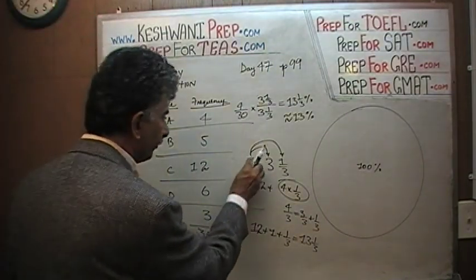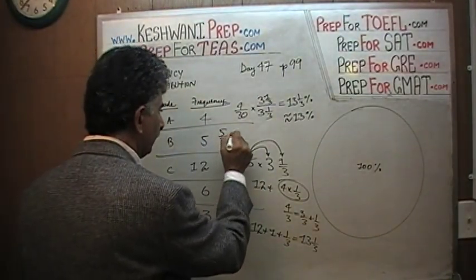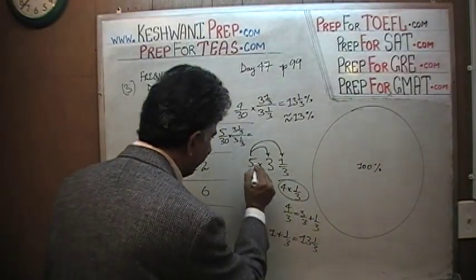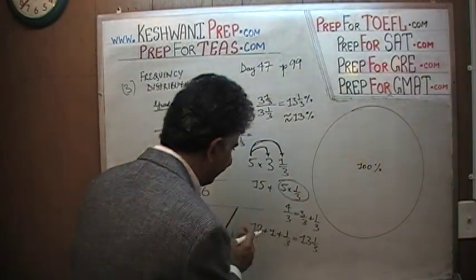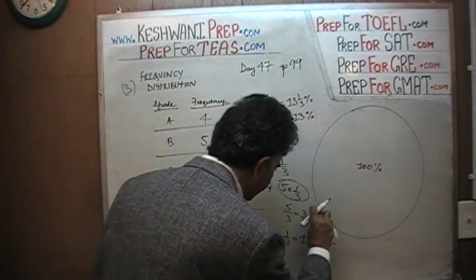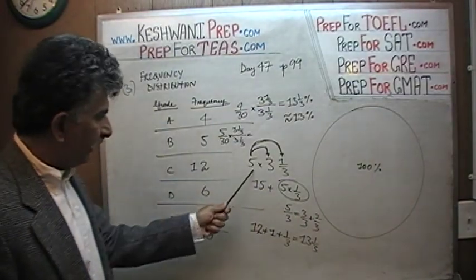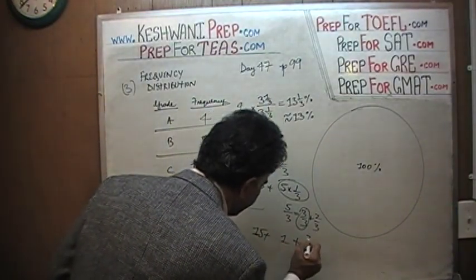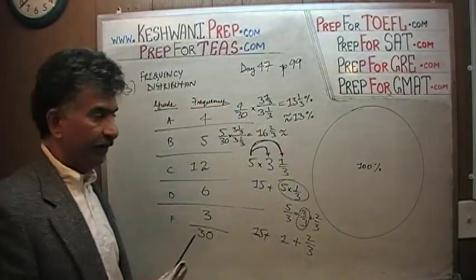Now we have to do the 5 — B is 5 out of 30. Multiply top and bottom by 3 and one-third. 5 times 3 is 15, and 5 times one-third is 5/3 — which is 1 and two-thirds. So 15 plus 1 and two-thirds is 16 and two-thirds. This comes out to 16 and two-thirds percent, which we approximate as 17 percent.